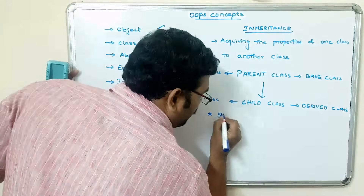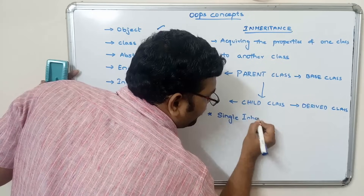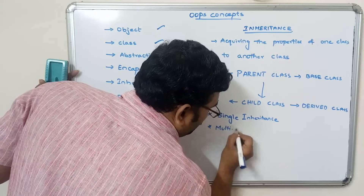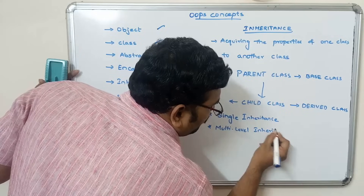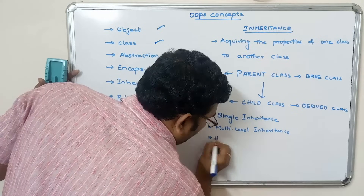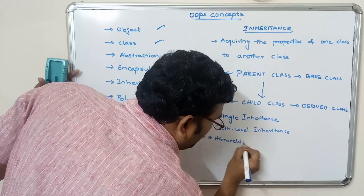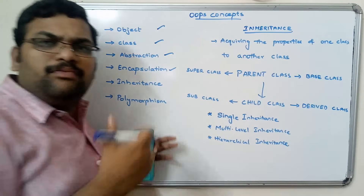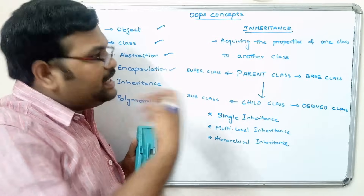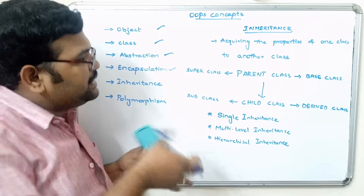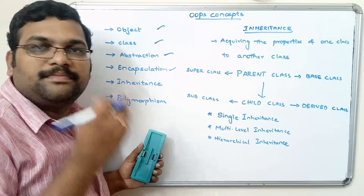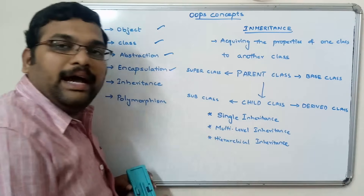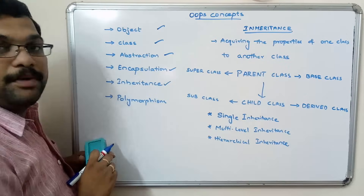There are different types of inheritance in Java: single inheritance, multi-level inheritance, and hierarchical inheritance. We will cover the basic introduction here and then go into each one in depth in further sessions. These three types — single, multi-level, and hierarchical — make up the inheritance concept.